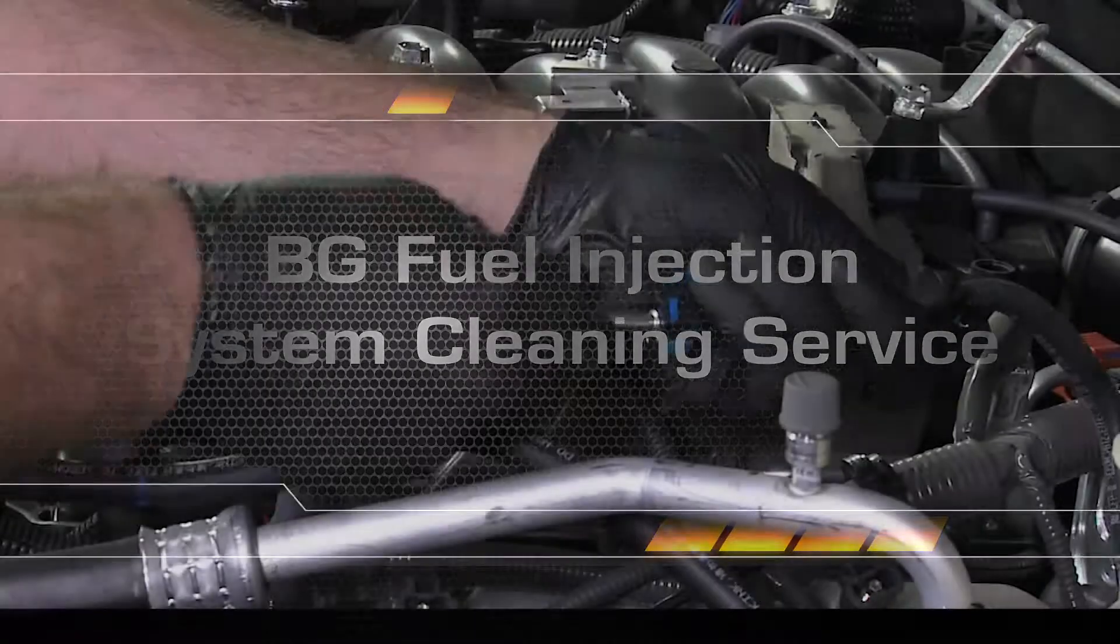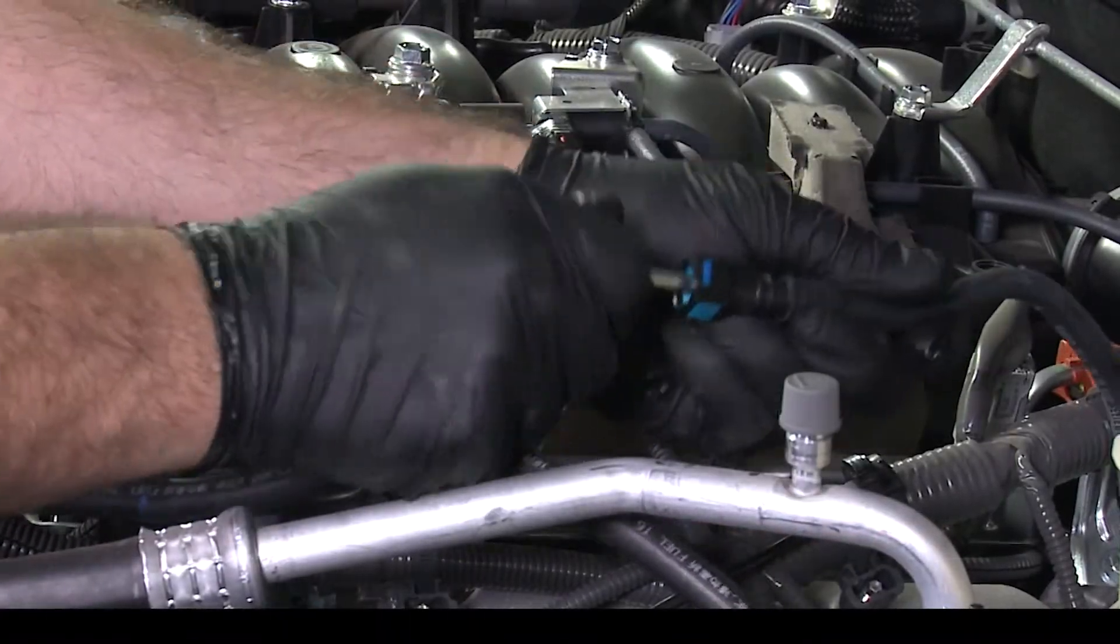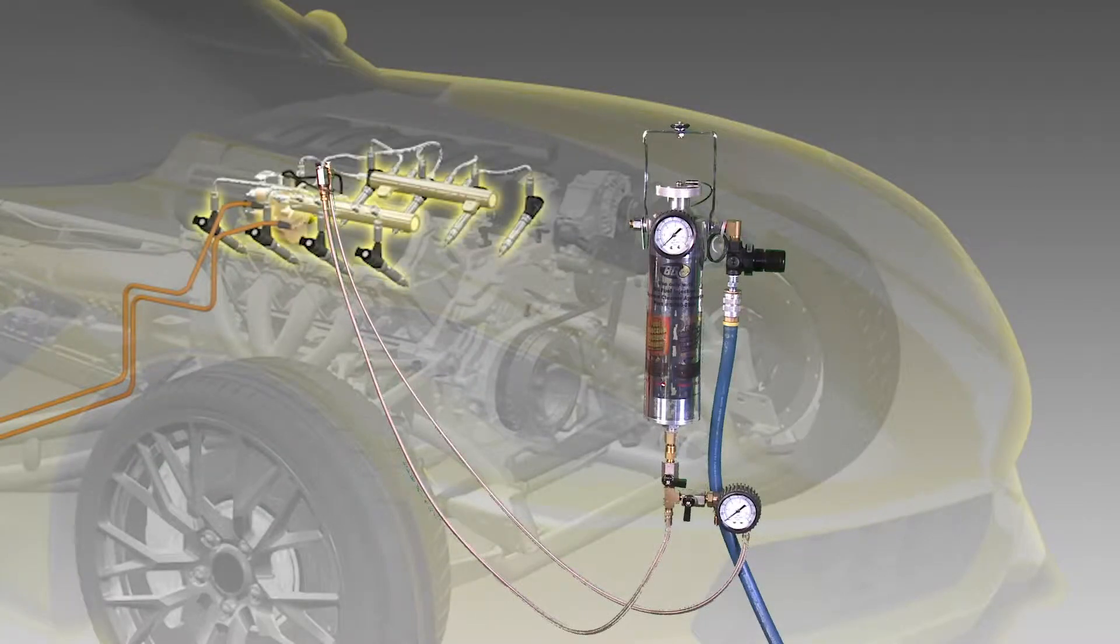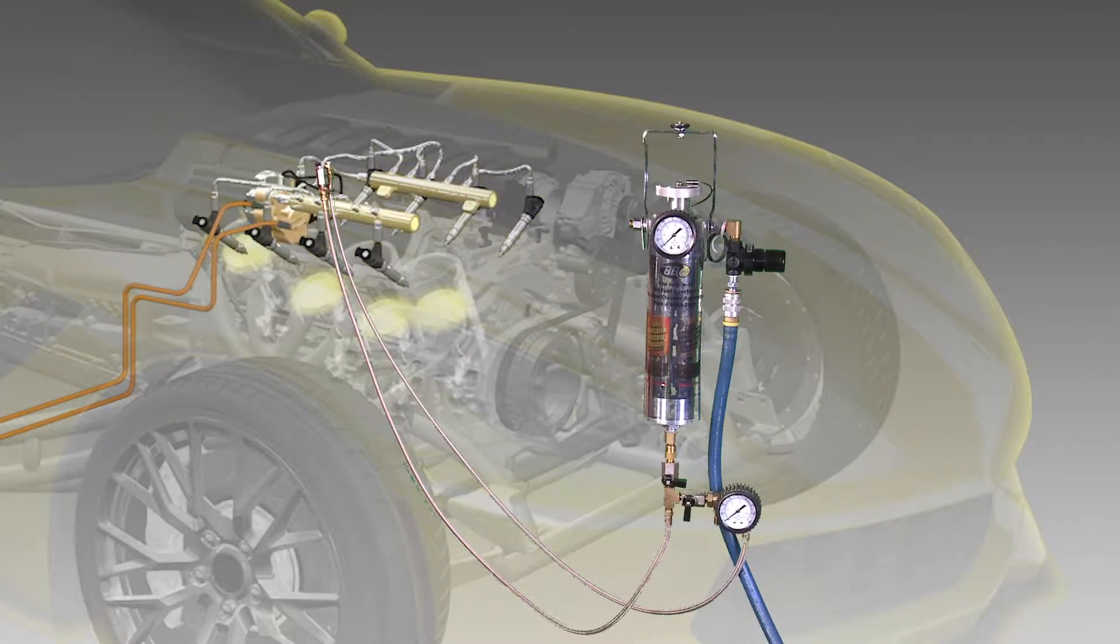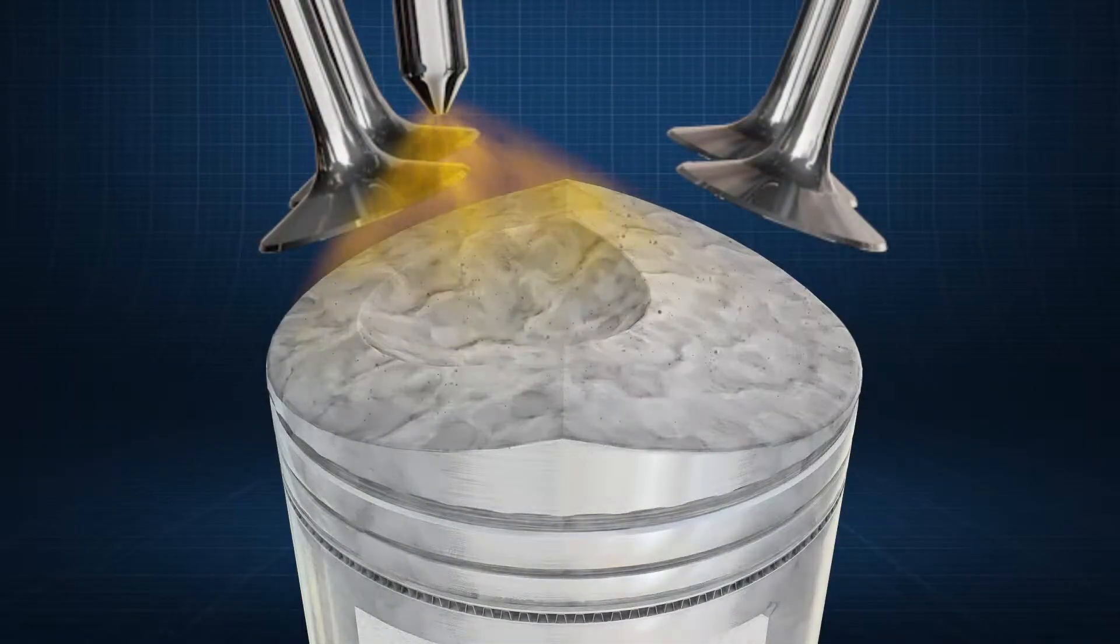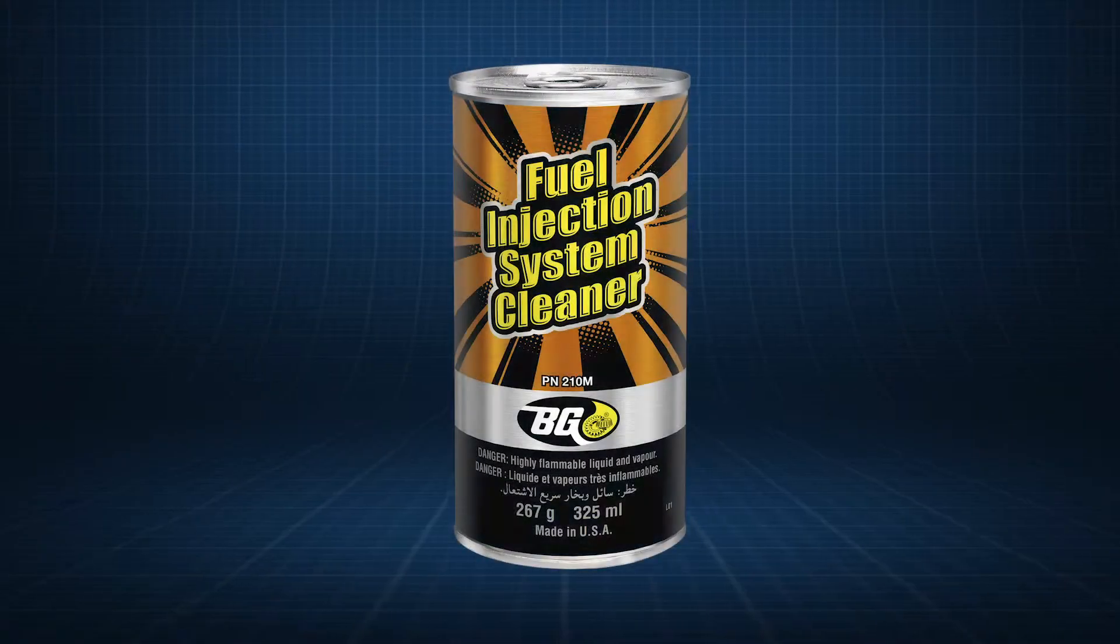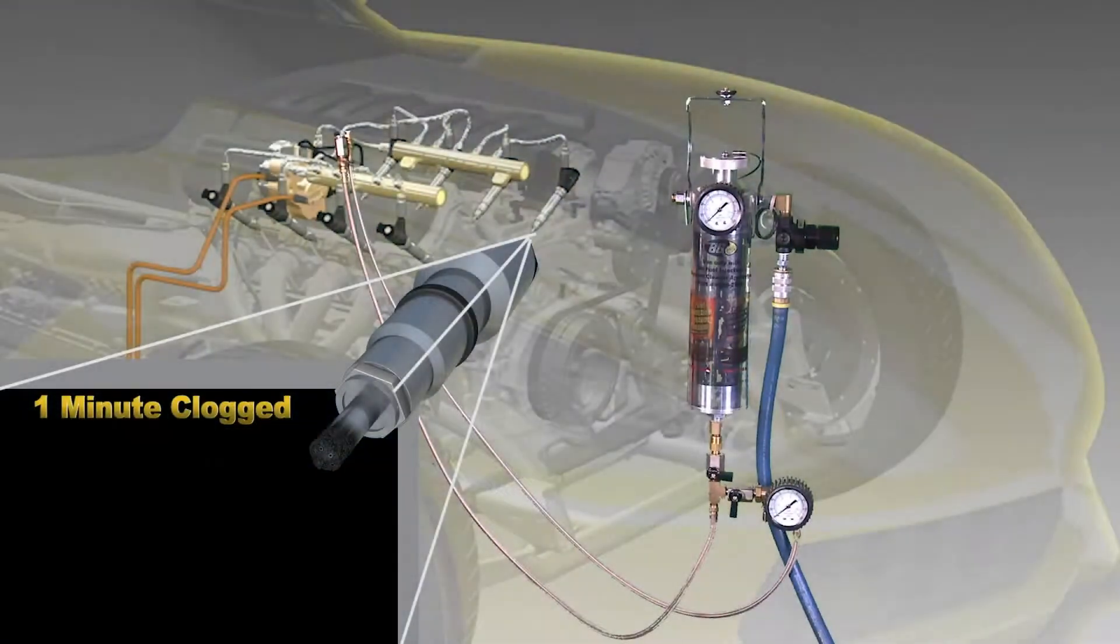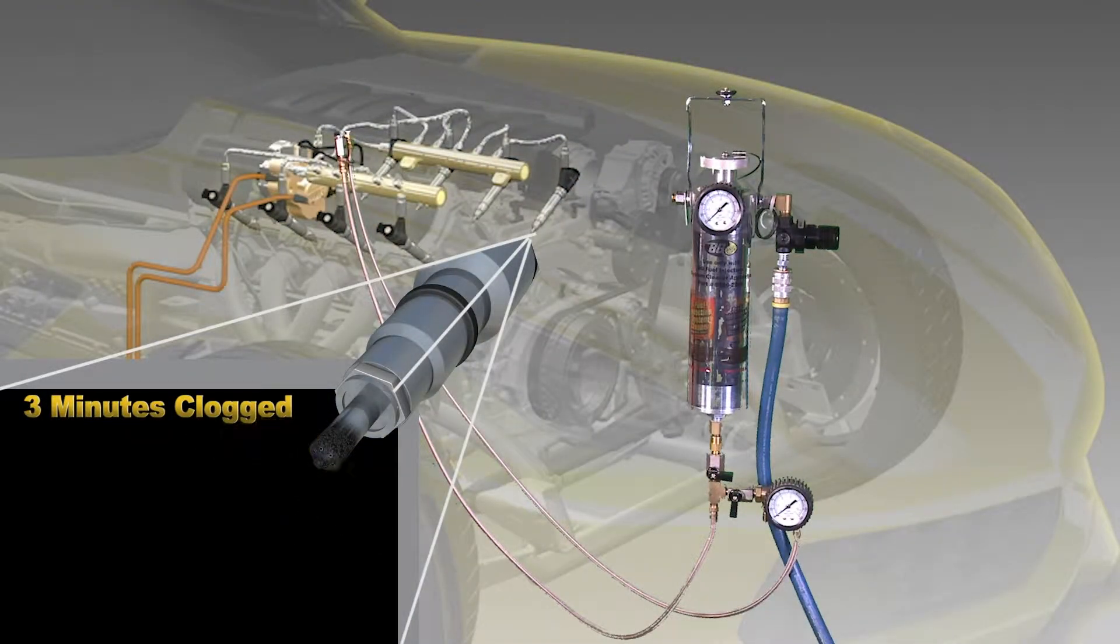Using specialized equipment, a technician will direct a powerful carbon cleaner through the injectors to loosen deposits and safely burn in the combustion process. BG fuel injection system cleaner part number 210M restores surfaces to like new condition.